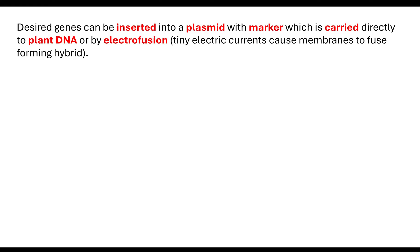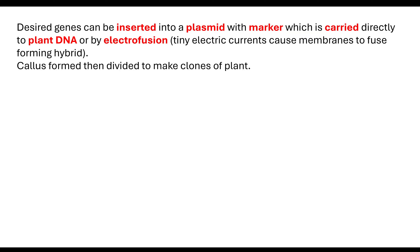It's important to note that there are ways to do this in plants as well — the desired gene can be inserted into a plasmid with those markers and is then carried directly to plant DNA. Another way to get the recombinant plasmid into plant cells is through a process called electrofusion. Electrofusion uses electrical currents to cause membranes to fuse together, forming a hybrid. This results in polyploidy, which is hard to do in animal cells because the membrane isn't as stable, so this tends to only work with plants. Once we have this hybrid, we can form a callus, which will then divide by mitosis and make clones of the plant.